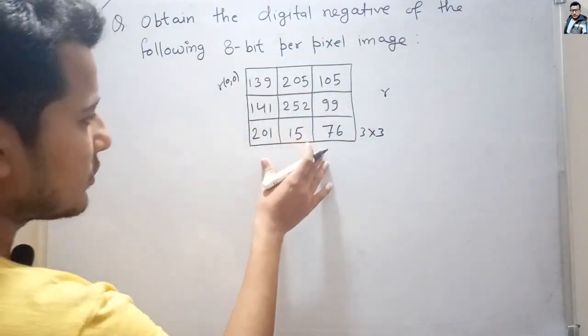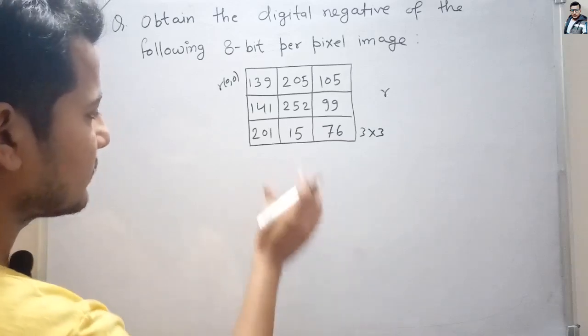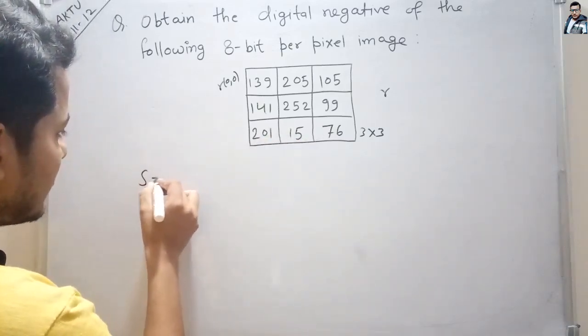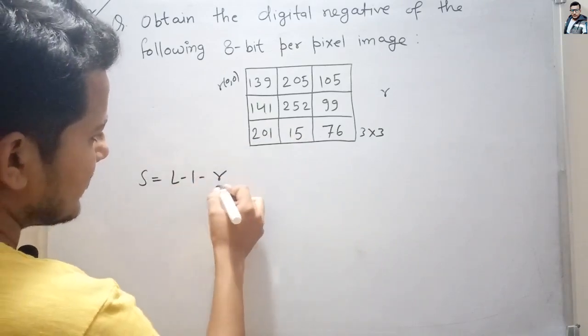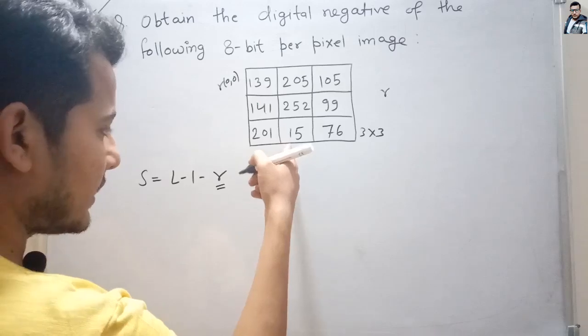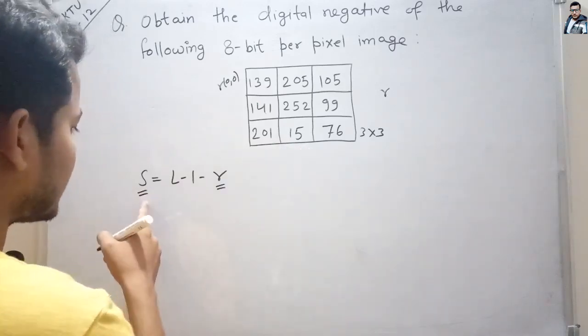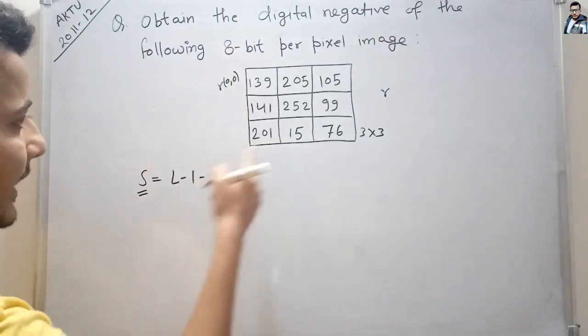The formula for obtaining the digital negative is s = L - 1 - r, where r is the pixel value of the given image and s is the pixel value of the digital negative.